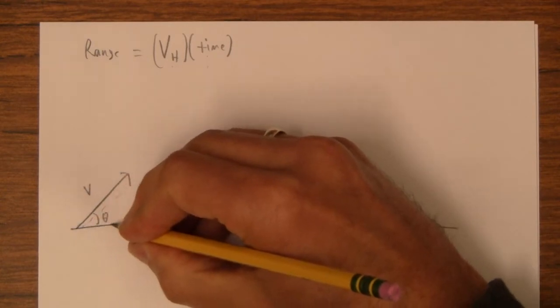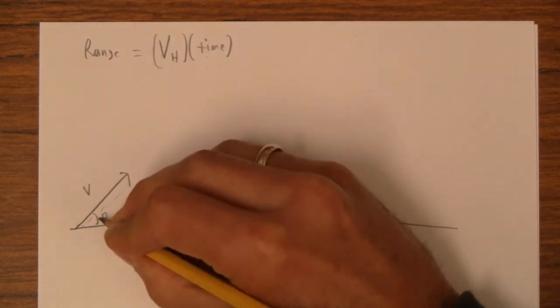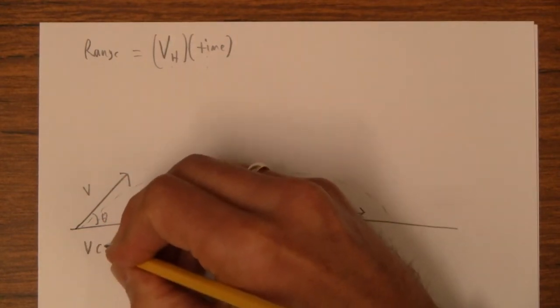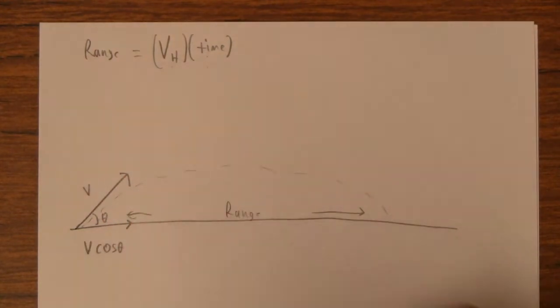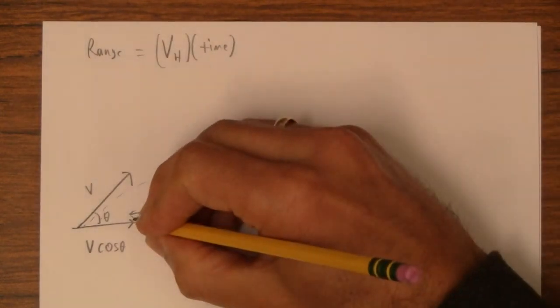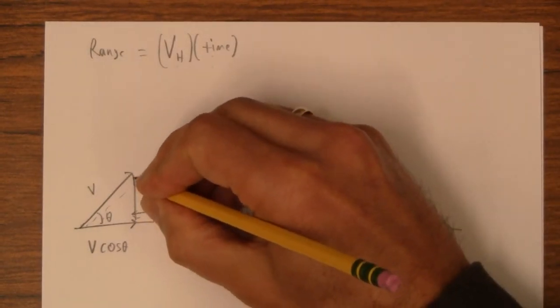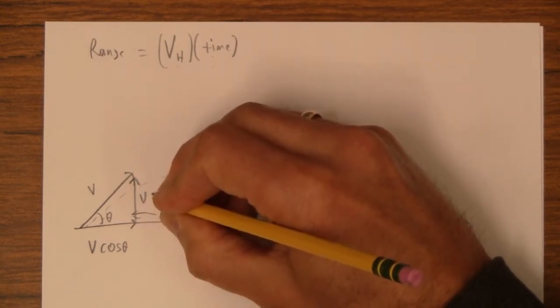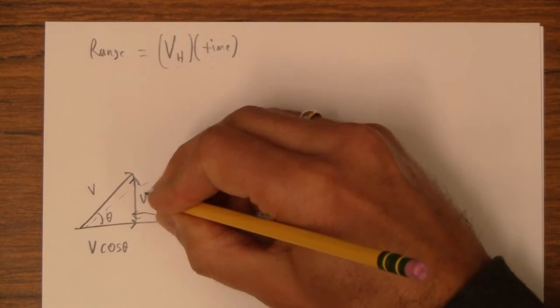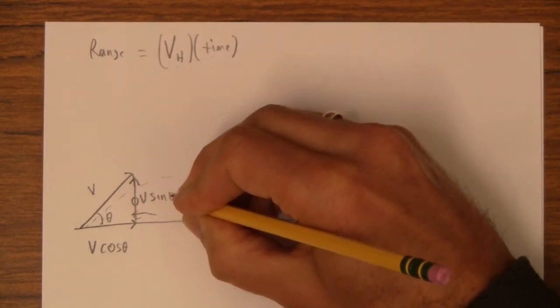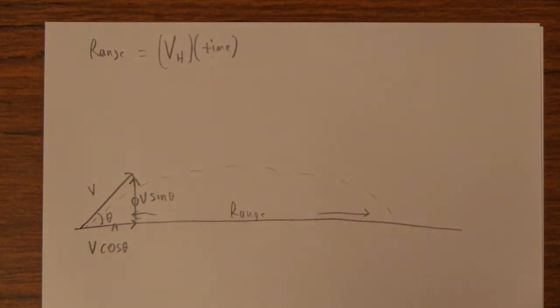The horizontal velocity is easy. If that's the angle and V is the hypotenuse there, then this is V cos theta. And then if we want to figure out the time it's in the air, well, that has to do with the vertical velocity. The more vertical velocity you have, the longer you stay in the air. And the vertical velocity is the opposite side, so it's V sin theta. This is the adjacent side, that's why it's cosine.